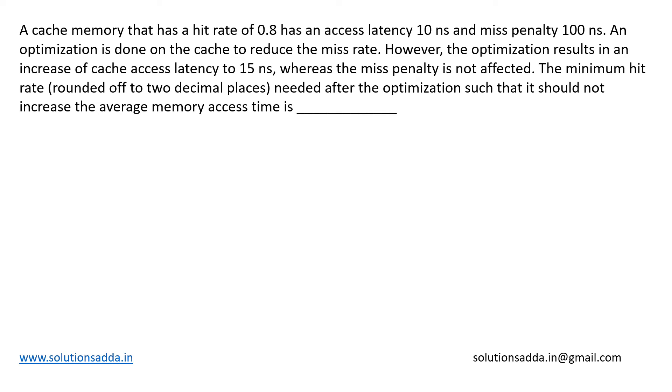This is a previous year GATE question. They have given us a cache memory in two different scenarios. In case one, the hit rate for this cache is 0.8 and the access latency is 10 nanoseconds, so we take c equal to 10 nanoseconds. The miss penalty, denoted as mp, equals 100 nanoseconds.